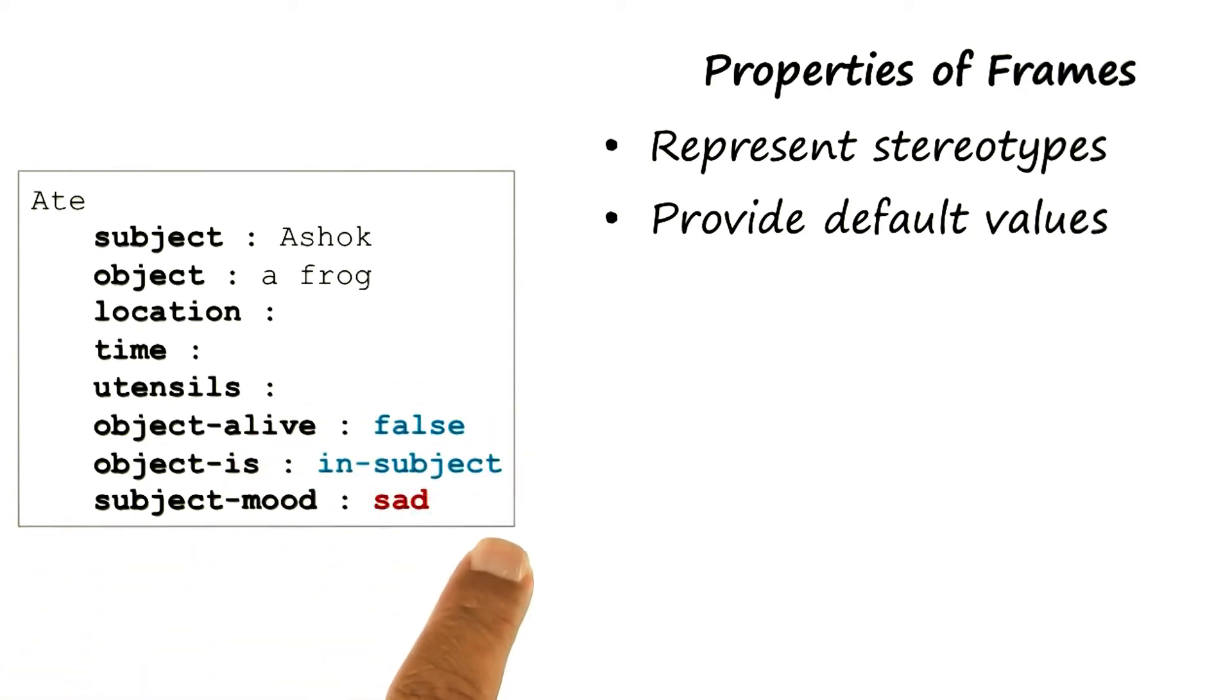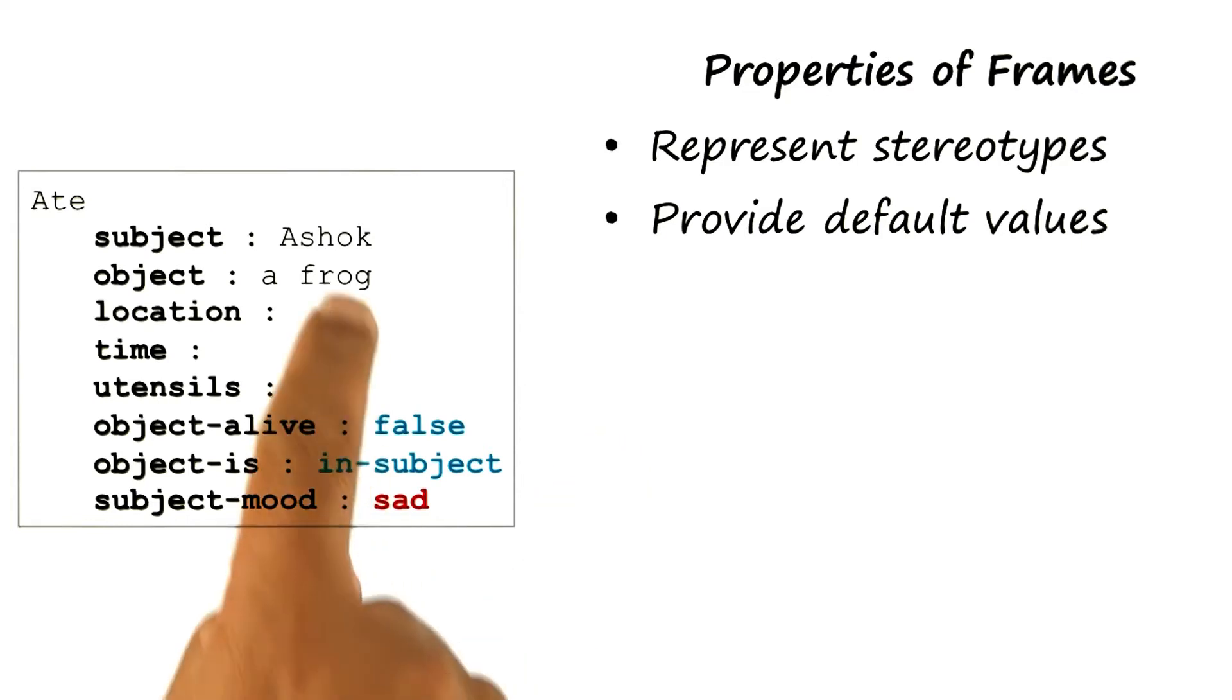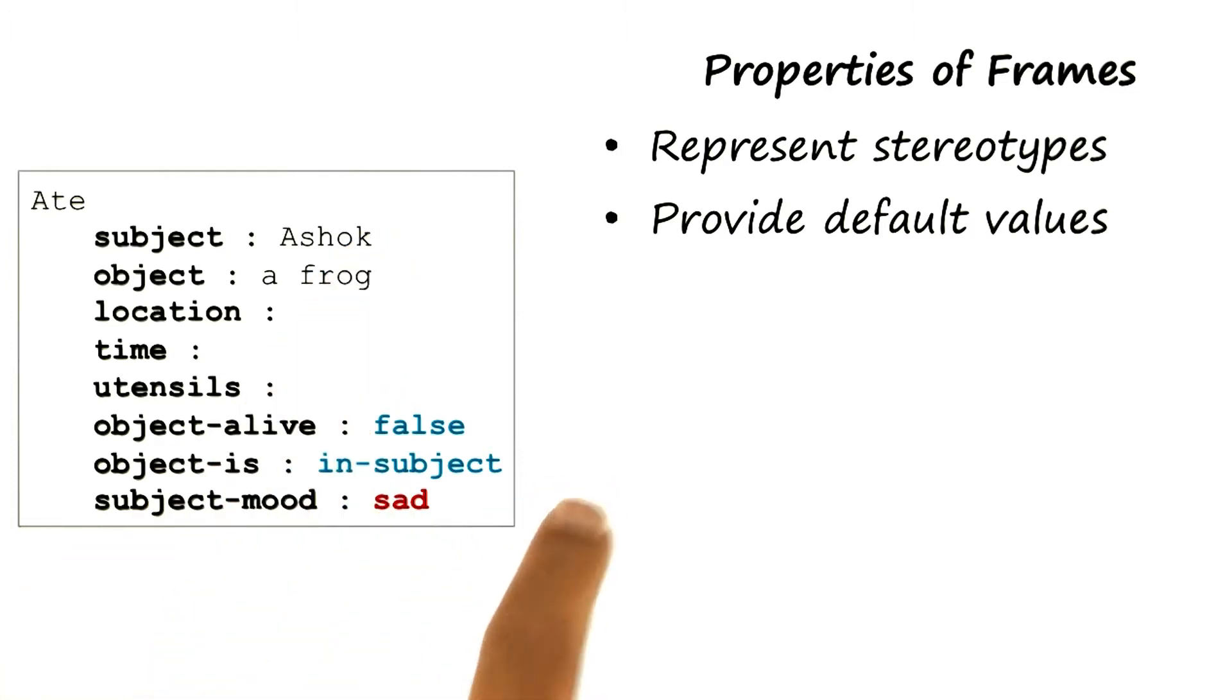Of course, when you have defaults, you can also have exceptions to them. As an example, it may be that when Ashok ate a frog, it made him sad because frogs don't suit him very well. Now this exception handling is both very powerful and a problem. It is powerful because I can have stereotypes with default values, and when needed, I can override the default values.